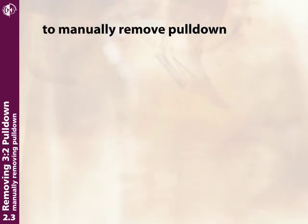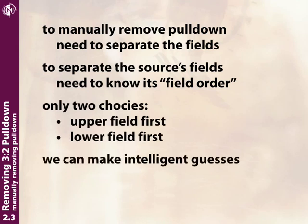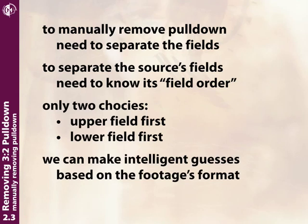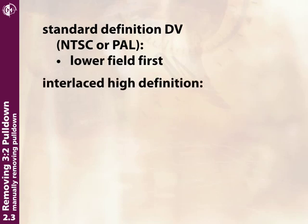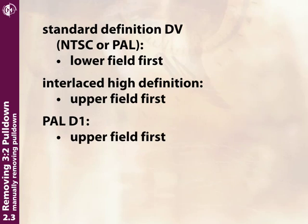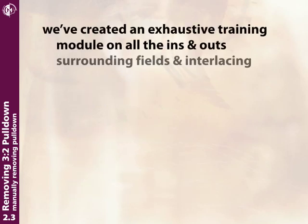To manually remove pulldown, first we need to separate the fields, and to do that we need to know the field order of the footage. There are only two choices: upper or lower field. Standard definition DV—either NTSC or PAL—is always lower field first. Interlaced HD high-definition footage is always upper field first. PAL D1 footage is also always upper field first. NTSC D1 footage can be either upper or lower field first, so you'll have to test both. There's an entirely separate module on fields and interlacing if you want to go deeper.